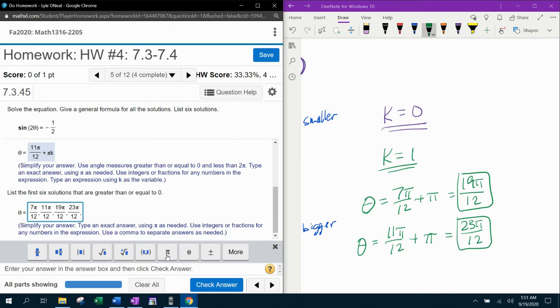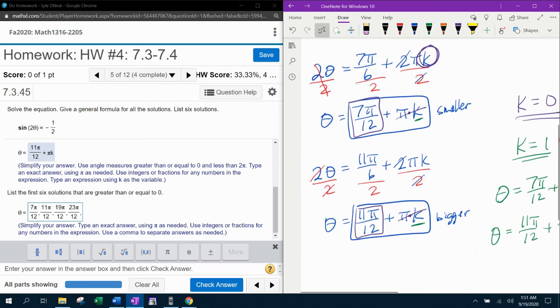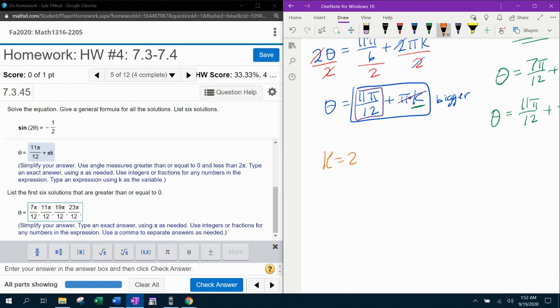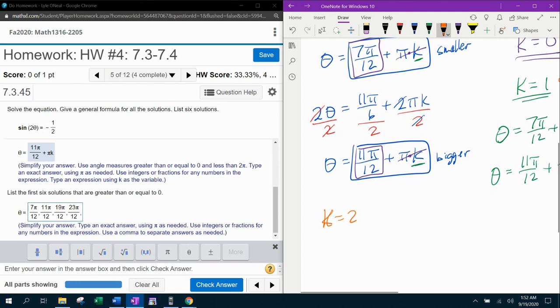And then rinse and repeat, if you know what that means. Rinse and repeat. That means we've done k is 0, k is 1. What should I use k to be next? You got it. We're going to say, what if k is 2? And now we're going to plug into our general formulas here. And here, we're going to plug in a k value of 2. So then our next angle would be 7 pi over 12 plus, and then that would be 2 pi. 2 pi. So again, with a common denominator, 2 pi in terms of 12, that would be 24 over 12.